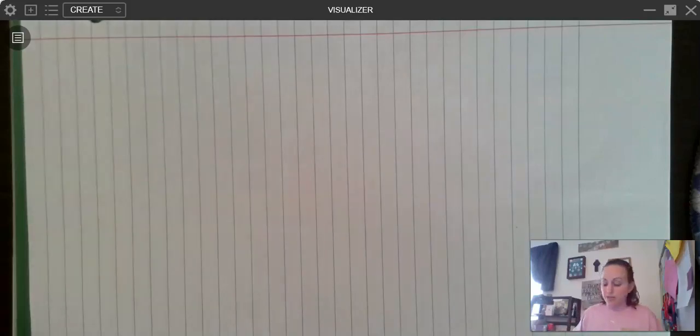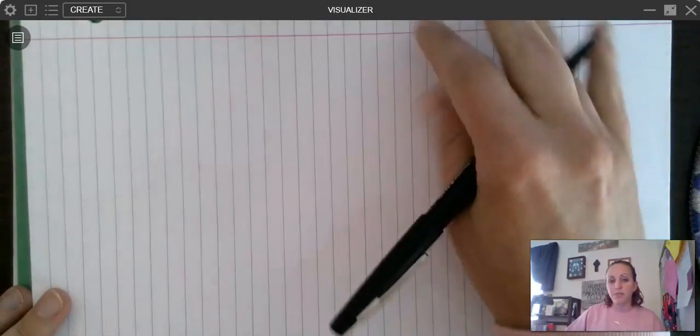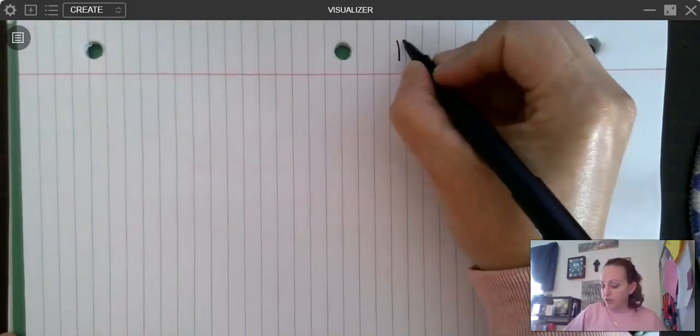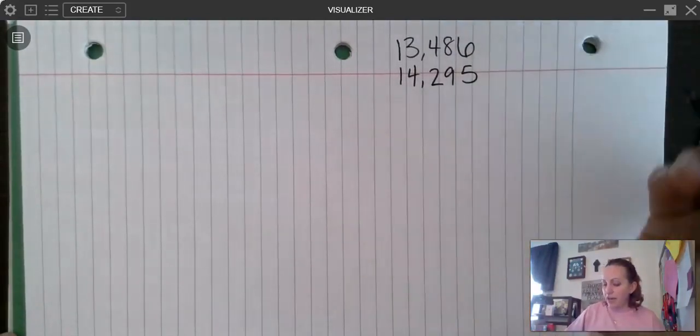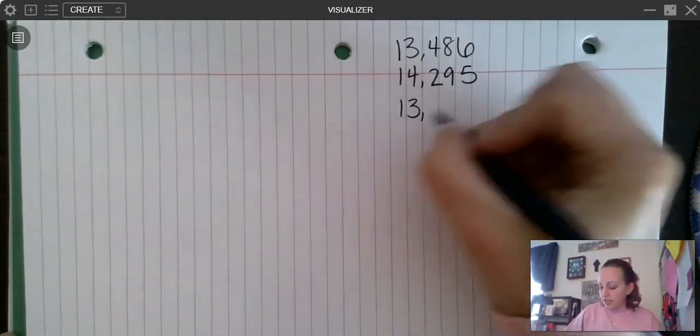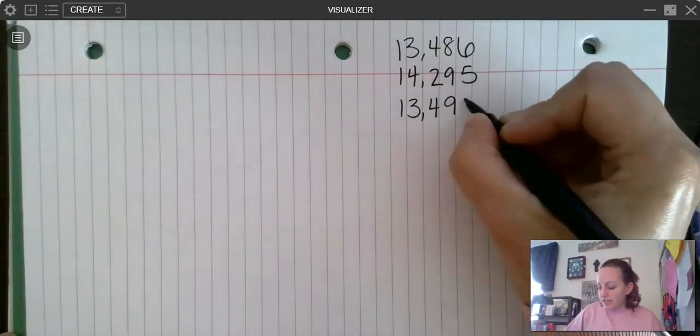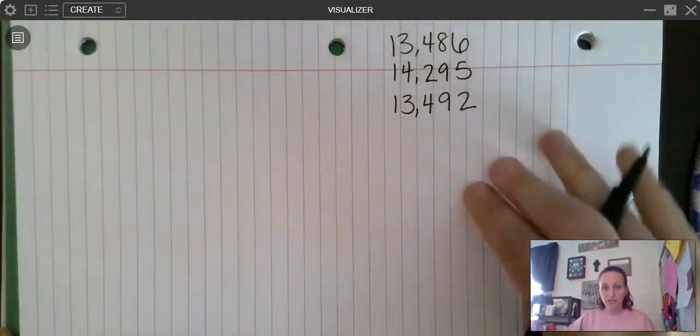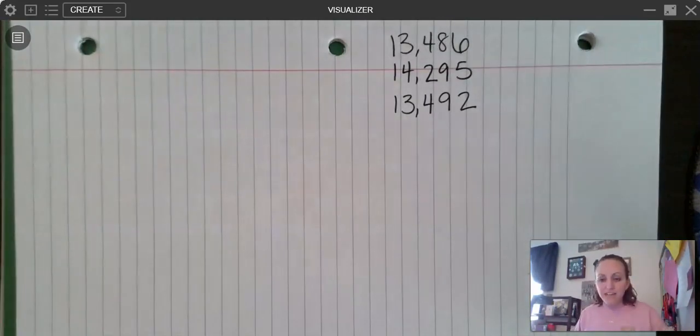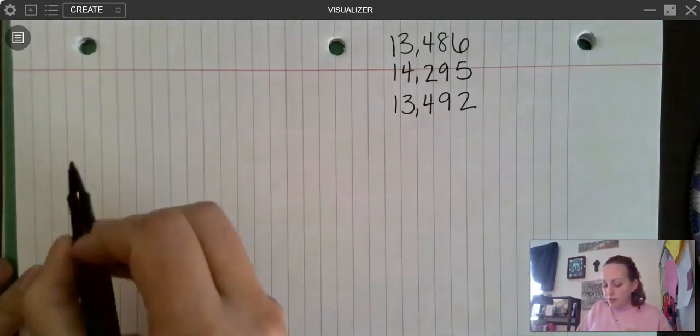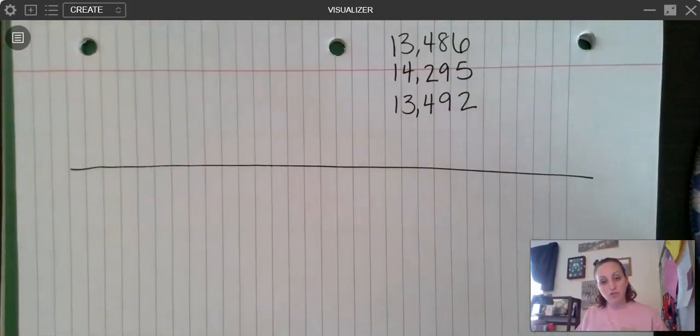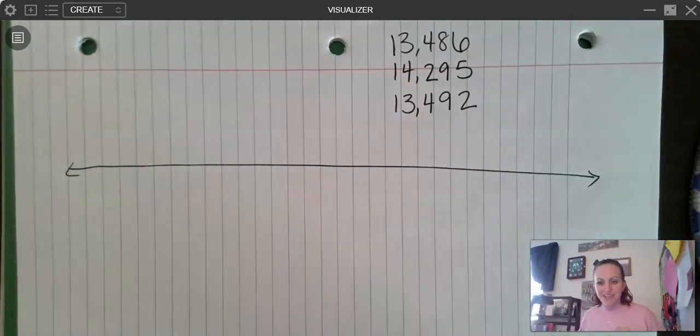So we are going to be comparing, we're actually going to compare three numbers and we're going to put them in order from least to greatest. All right. So we're going to compare 13,486. We're going to compare 14,295. And we are going to look at 13,492. Okay. These are the three numbers that we're putting in order. Now you may immediately know which one is the biggest and which one's the smallest and which one goes in the middle. And if that's the case, then awesome. All right. But if you're maybe a little bit unsure, here's how we can do our open number line. All right. So I'm going to take my number line and I'm going to draw it. We always put our arrows on the end because that shows the numbers keep going in either direction.